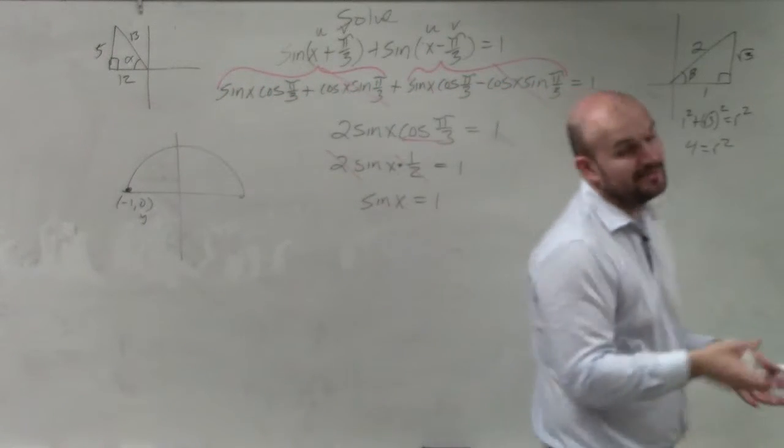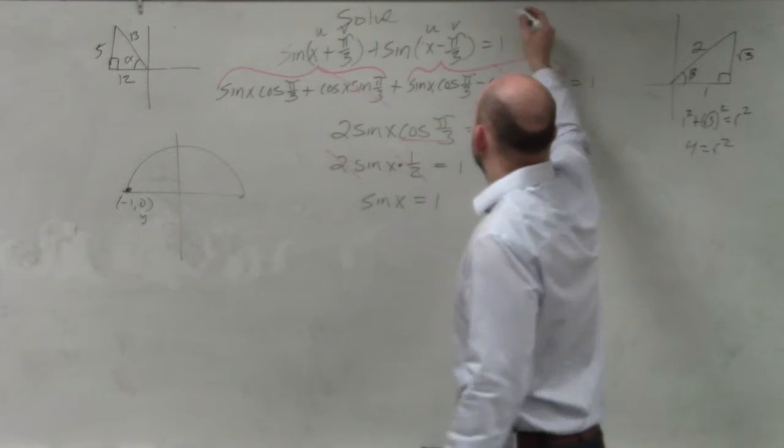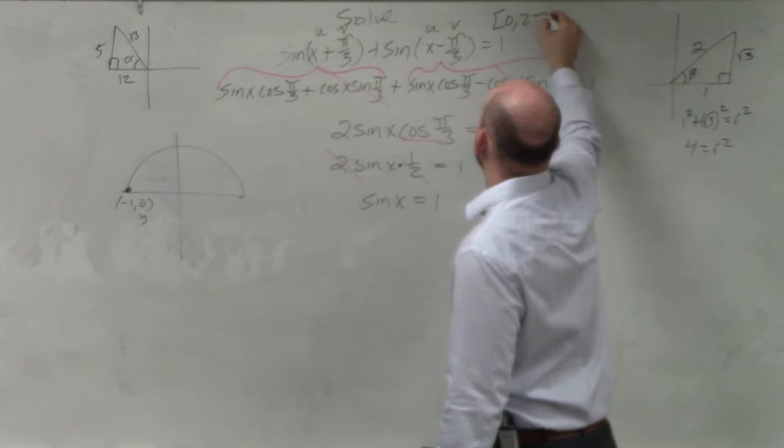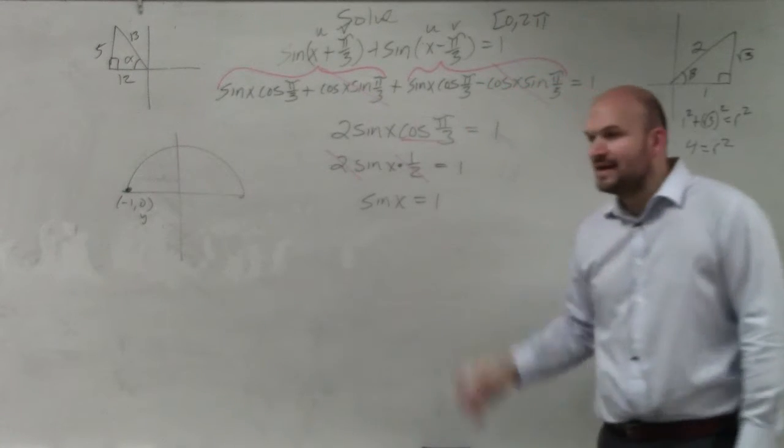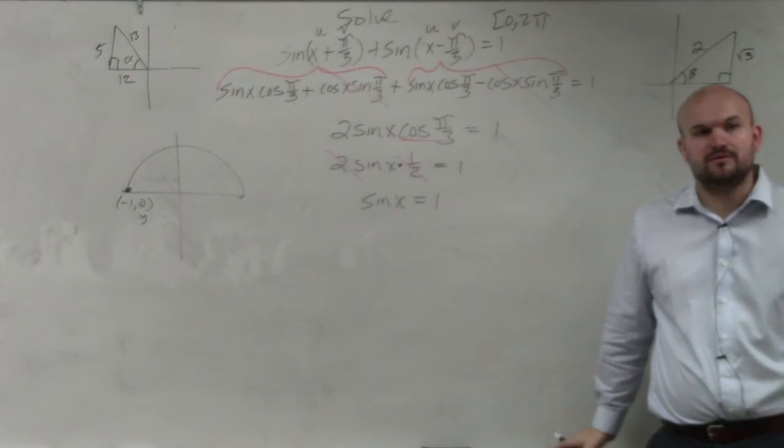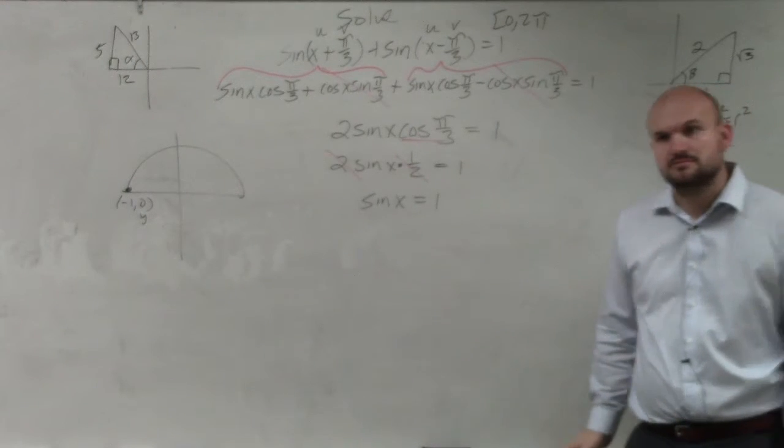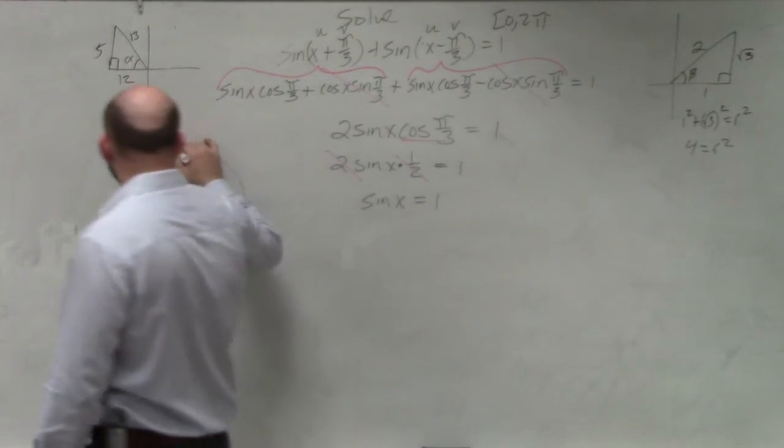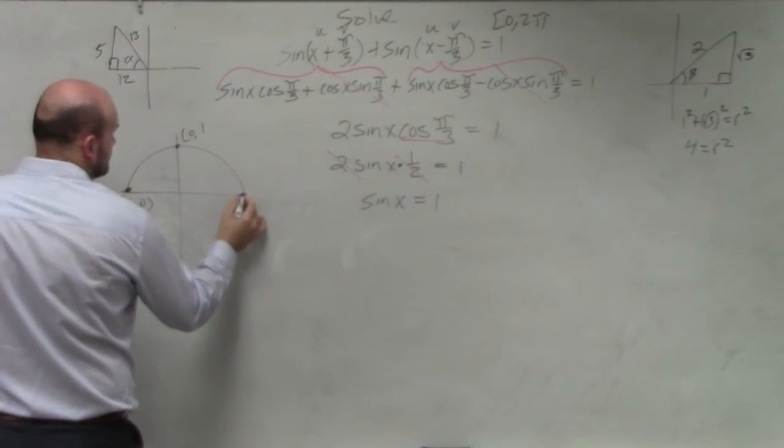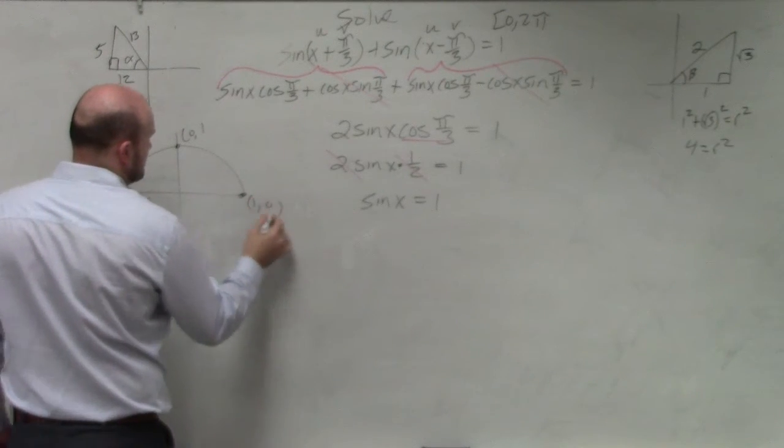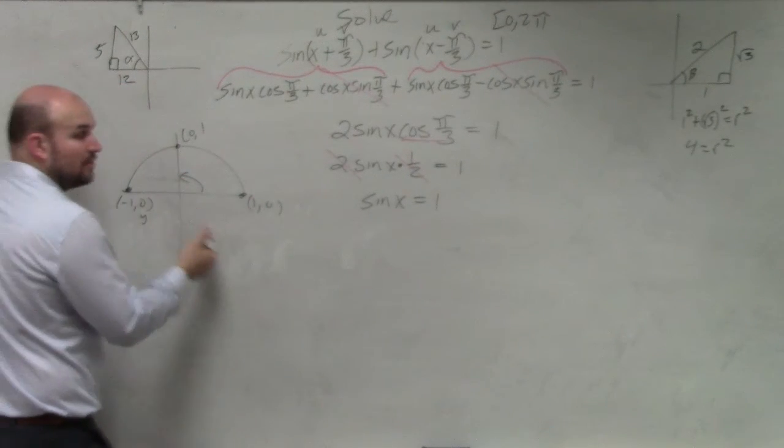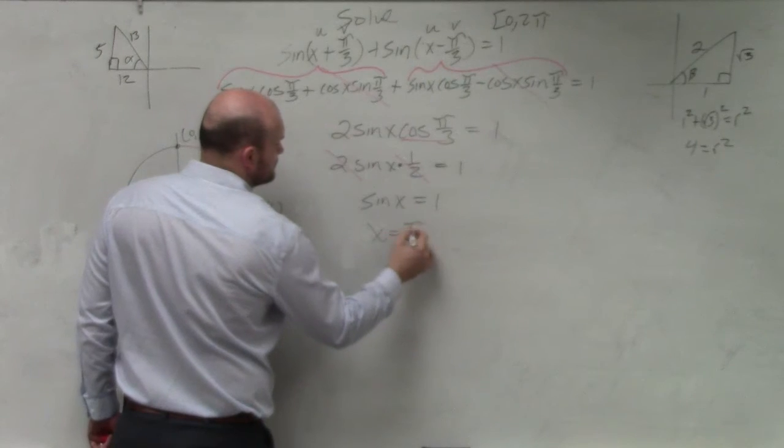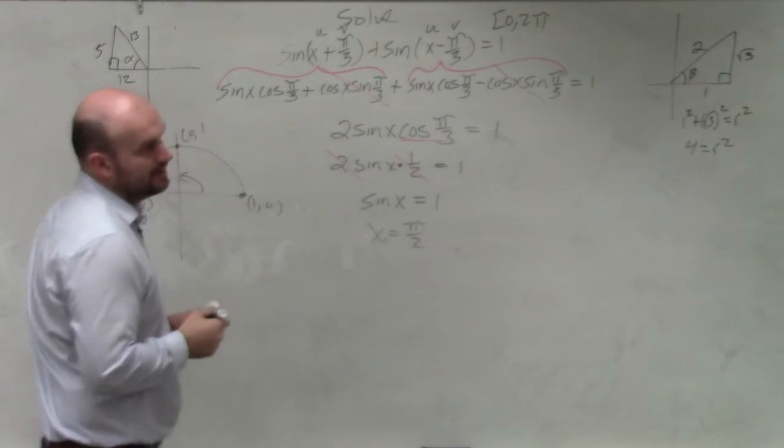And ladies and gentlemen, I'm sorry, I didn't tell you. This is to find all the solutions between 0 and 2 pi. So for what angles is sine x equal to 1? Which angle is it, guys? 90 degrees or pi over 2. I'm done.